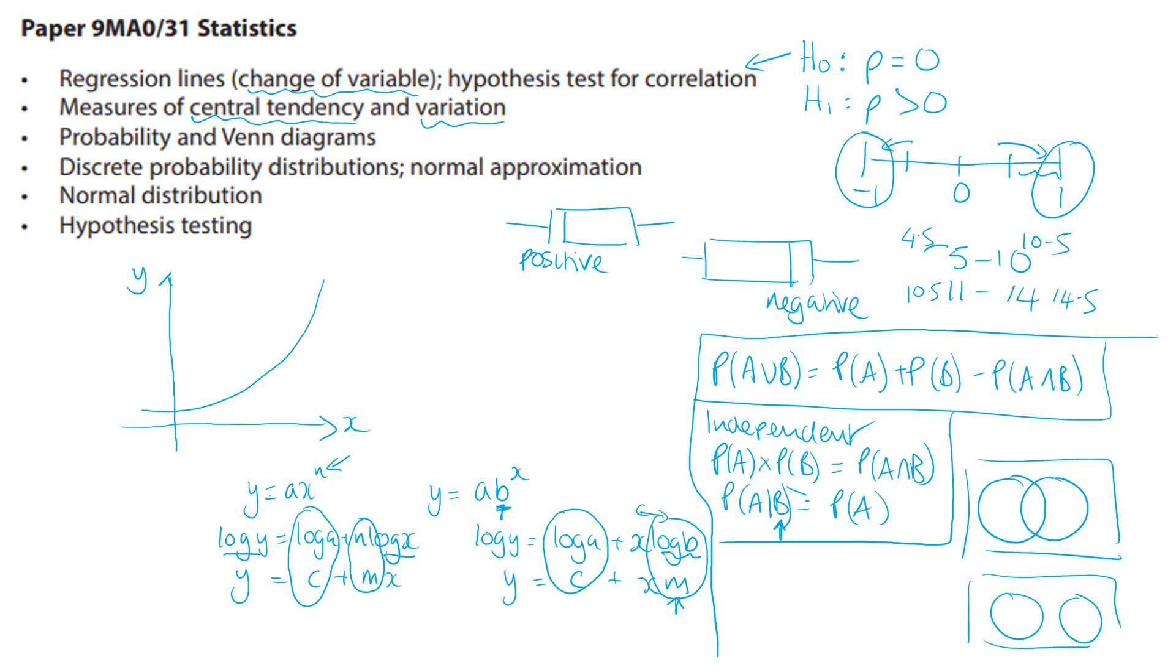If you have any events and you're doing a conditional probability, then the rule for conditional probability is that the probability of A given B is the probability of A intersection B divided by the probability of B.